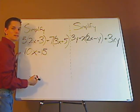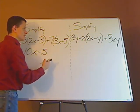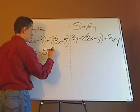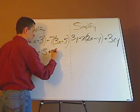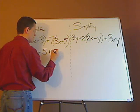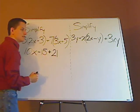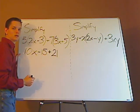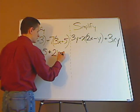Then you distribute the 7. Alright, what's 7 times the 3x? Right, it's 21x. And what's 7 times 5? Right, it's 35.